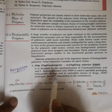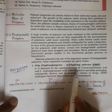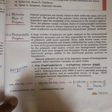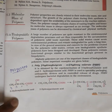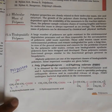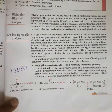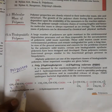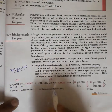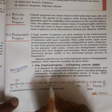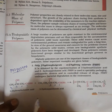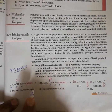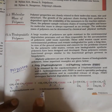PHBV is obtained by the co-polymerization of 3-hydroxybutyric acid — where the third position carries a hydroxy group — with 5-carbon-containing 3-hydroxyvalerate acid undergoing a polymerization reaction.